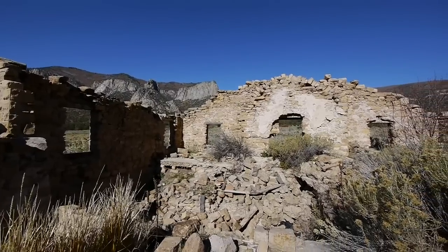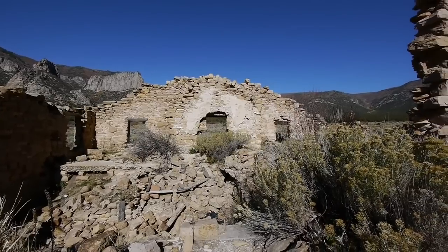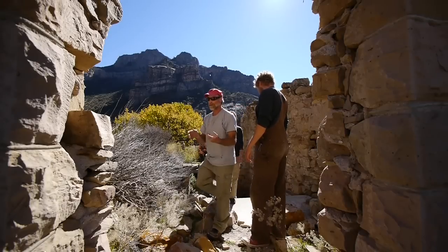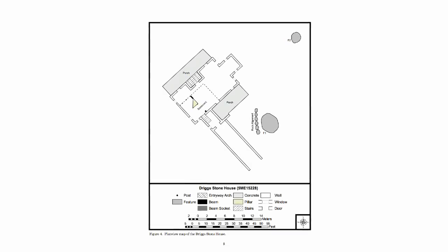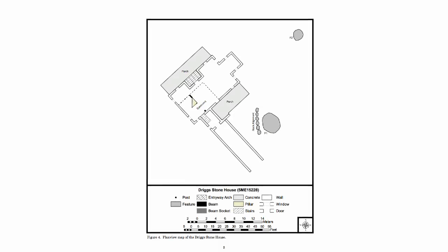It's been in disrepair for many decades, and in 2005 there was what we call a historic structure assessment of the site, where archaeologists and architectural historians looked at it to see what needed to be done to stabilize it so that it could be preserved. We did the stabilization assessment in the fall of 2005 on the Driggs Stonehouse. At that time we did a scale plan view map, a wall-by-wall structural assessment of the building, and came up with a plan for how to make sure that the building could remain standing for a long time.